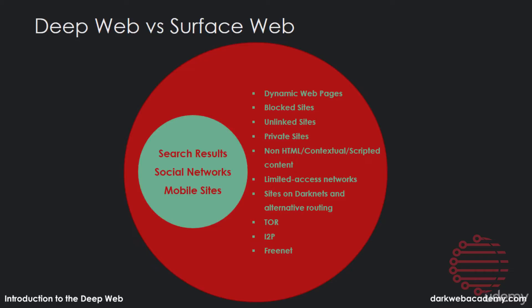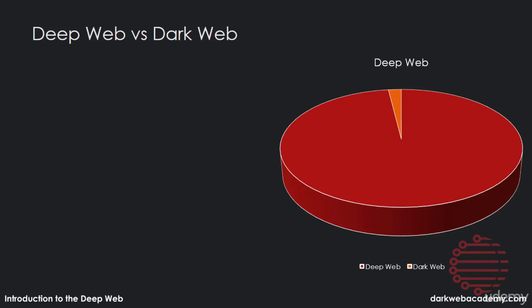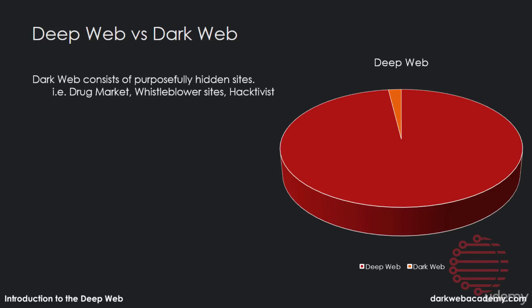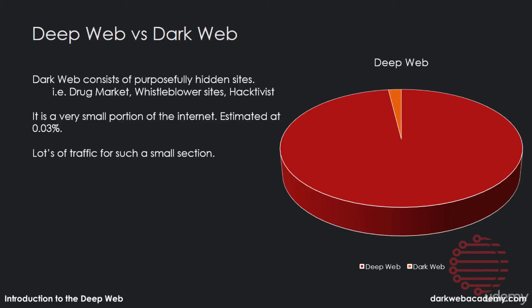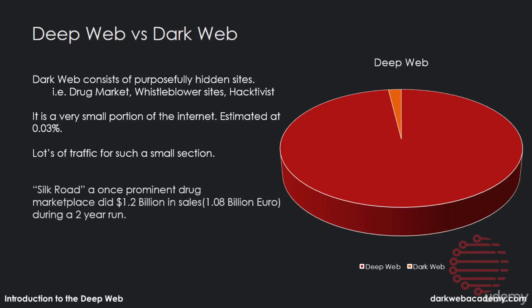So what's the difference between the deep web and the dark web? The dark web and deep web are very different things. The dark web consists of purposely hidden sites, like drug markets, whistleblower sites, hacktivist sites, and more. It is very small compared to the rest of the internet, estimated at only 0.03%. But for such a small section, it has a lot of traffic. The Silk Road, a once prominent drug marketplace, did over $1.2 billion in sales during a two-year run, which is an unheard of amount for such a small site.